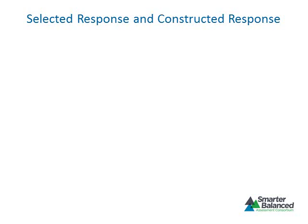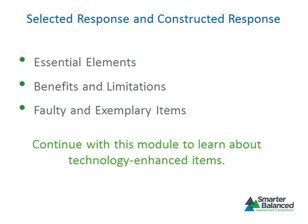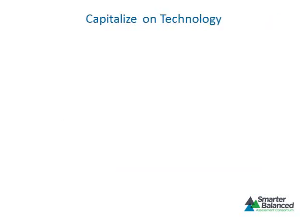Thus far, this module has explored several issues specific to selected response and constructed response items—specifically, the essential elements of each item type including the concept of a stem, stimuli, options, and scoring information. The module also explored the benefits and limitations of each item type, characteristics of faulty items, and elements of exemplary items. This information should guide the development of selected response and constructed response items specified by the task models for each assessment target measured by the Smarter Balanced Assessment System. Participants writing technology-enhanced items should continue; others may end the module now.